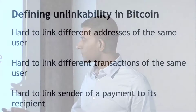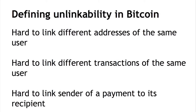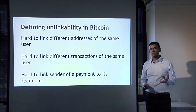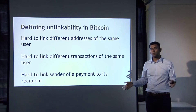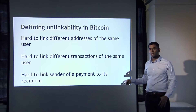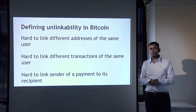Even with a circuitous route of transactions, somebody looking at the blockchain might still infer that bitcoins left some address and showed up at another, roughly equal in amount and roughly in the same time period. So even if we try to achieve unlinkability, it can only be unlinkability among a smaller subset of transactions that look like each other — not among all possible transactions in the system.